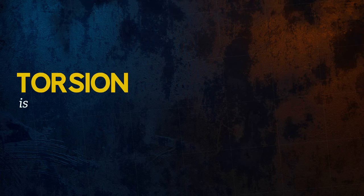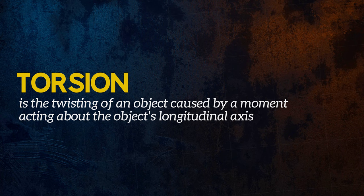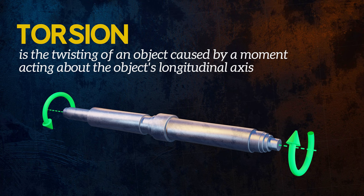Torsion is the twisting of an object caused by a moment acting about the object's longitudinal axis. It is a type of deformation.